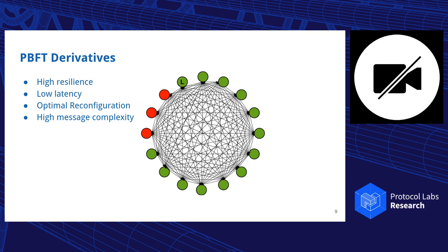And the system will be able to achieve consensus. PBFT is a good example because they offer high resilience, low latency, and optimal reconfiguration. In F plus one steps, they will be able to reconfigure correctly. One of the problems of PBFT derivatives is that they have high message complexity due to the quadratic message complexity.